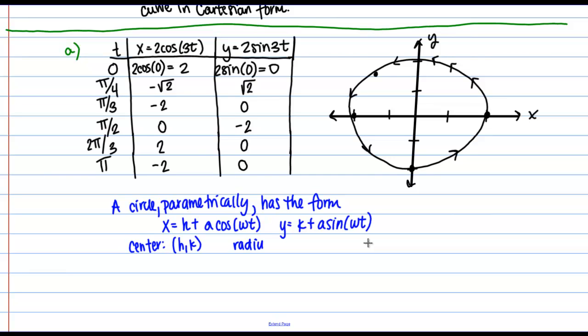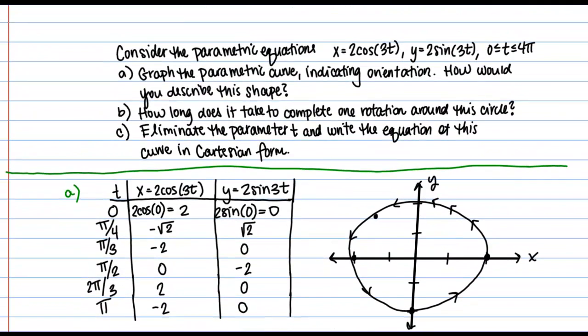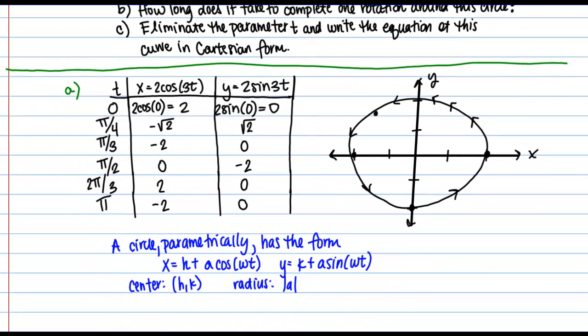And the radius is going to be the absolute value of A. We'll talk more about what ω means in just a second. So if you happen to know those equations well, then you could have known from the beginning what this shape would look like.